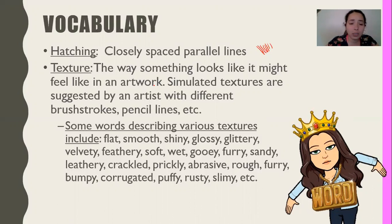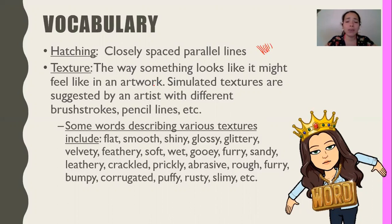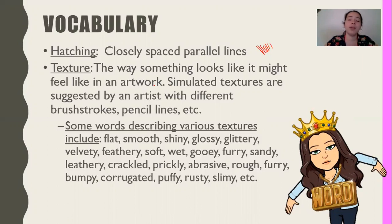Some words that describe various textures are: flat, smooth, shiny, glossy, glittery, velvety, feathery, soft, wet, gooey, furry, sandy, leathery, crackled, prickly, abrasive, rough, bumpy, corrugated, puffy, rusty, slimy, and other words like that. Those are all texture words.